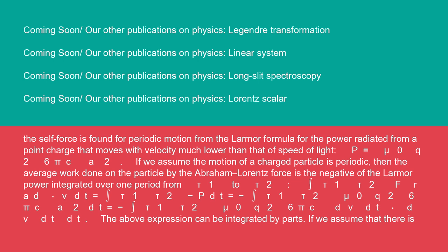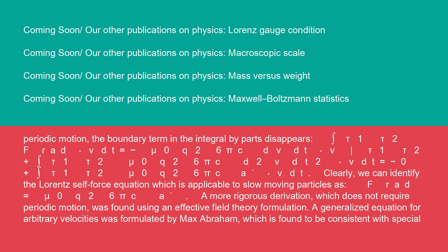∫(τ₁ to τ₂) F_rad·(dv/dt)dt = ∫(τ₁ to τ₂) -P dt = -∫(τ₁ to τ₂) (μ₀q²)/(6πc)A² dt = -∫(τ₁ to τ₂) (μ₀q²)/(6πc)(dv/dt)·(dv/dt)dt. The above expression can be integrated by parts. If we assume that there is periodic motion, the boundary term in the integral by parts disappears. ∫(τ₁ to τ₂) F_rad·(dv/dt)dt = -(μ₀q²)/(6πc)(dv/dt)·v|_(τ₁)^(τ₂) + ∫(τ₁ to τ₂) (μ₀q²)/(6πc)(d²v/dt²)·v dt = 0 + ∫(τ₁ to τ₂) (μ₀q²)/(6πc)A·v dt. Clearly, we can identify the Lorentz self-force equation which is applicable to slow moving particles as F_rad = (μ₀q²)/(6πc)A.